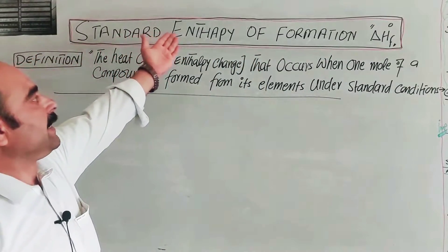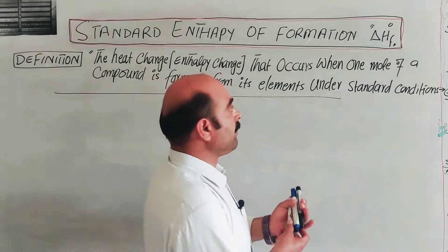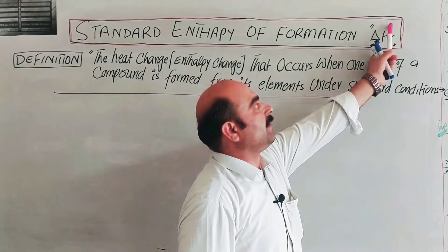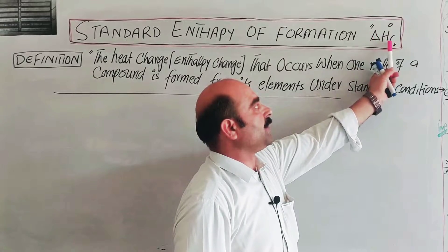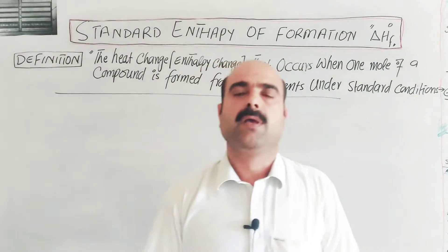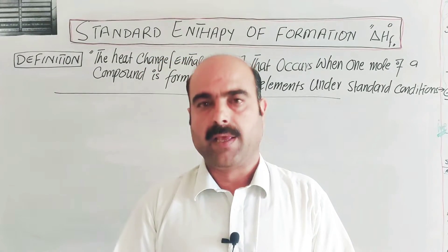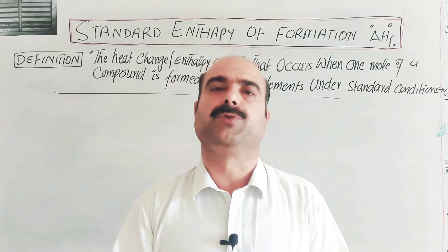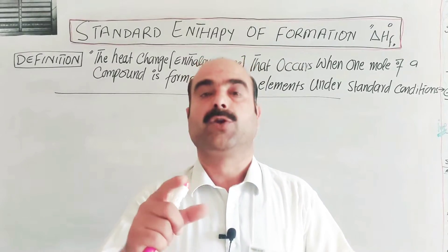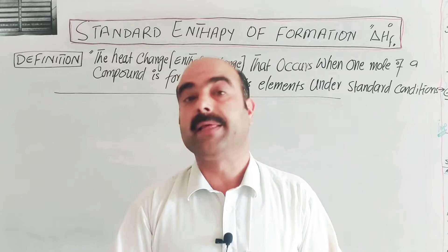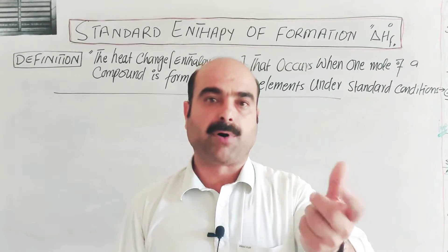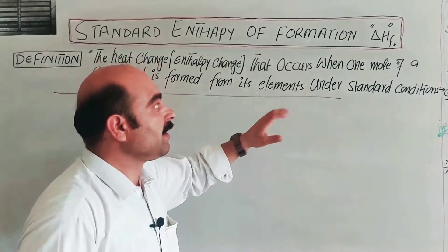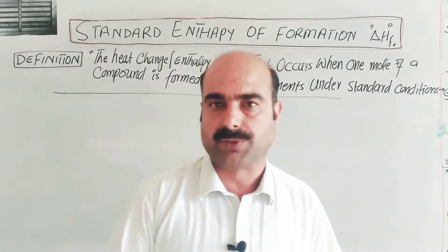Students, let us learn about the standard enthalpy of formation, which is represented by delta H naught F. It is the standard enthalpy change during the formation of a compound. When a compound is formed from its elements, the enthalpy change — the heat evolved or absorbed — under standard conditions is the standard enthalpy of formation. The symbolic representation is delta H degree F, where F stands for formation.